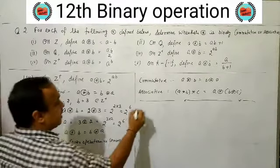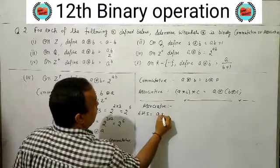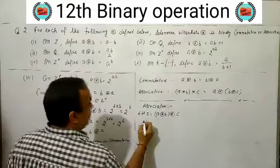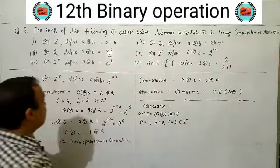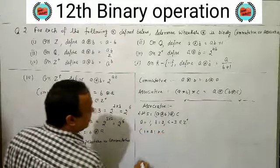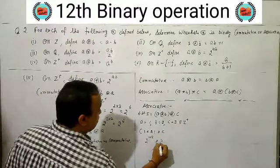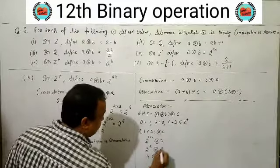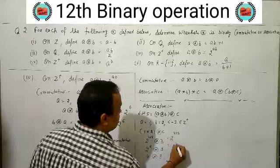Now checking associative for a★b = 2^(AB). Left hand side: (A★B)★C with A=1, B=2, C=3. First: 1★2 = 2^(1×2) = 2^2 = 4. Then 4★3 = 2^(4×3) = 2^12.